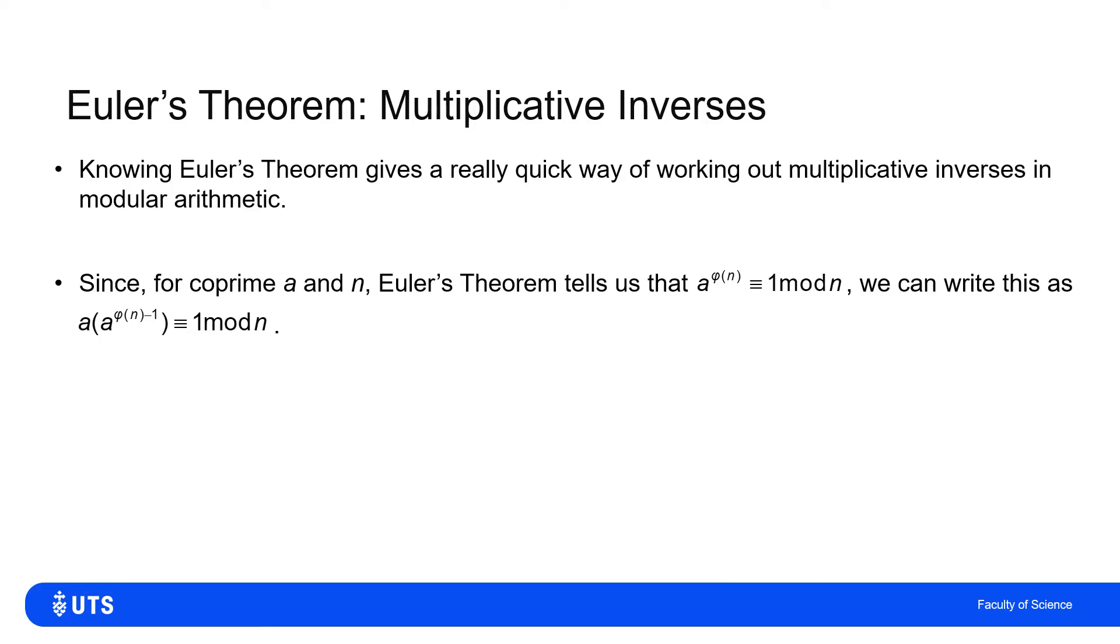Well, we know that for coprime a and n, we have that a to the phi n is equivalent to 1 mod n. So instead of writing a to the phi n, we write it as a times a to the phi n minus 1, and that's still equivalent to 1 mod n.